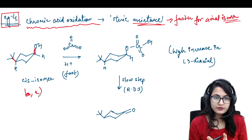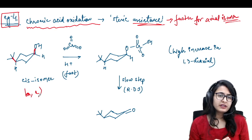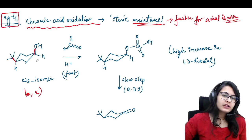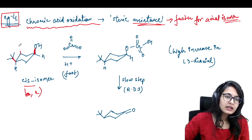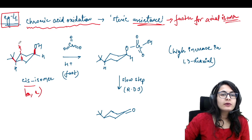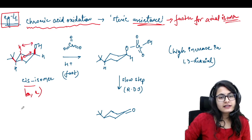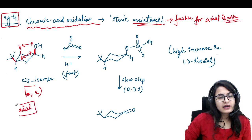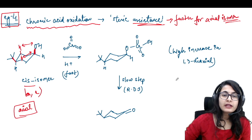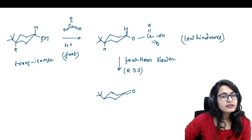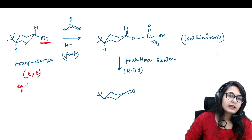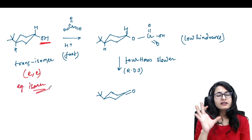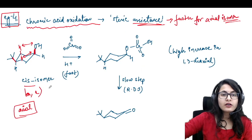It's not necessary that you always take the 1,4 isomer — you can take the 1,3 isomer or the 1,2 isomer also. All I want you to understand is that the cis isomer will have one group in the axial position and it will already have a 1,3-diaxial interaction — that is more important. So you will rather write it as the axial isomer. Also, you are having the trans isomer with the OH on the equatorial position — so you call it the equatorial isomer. We are going to see the reactivity of both of these with chromic acid oxidation.